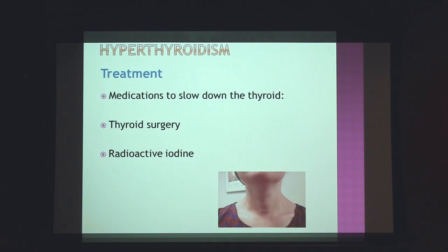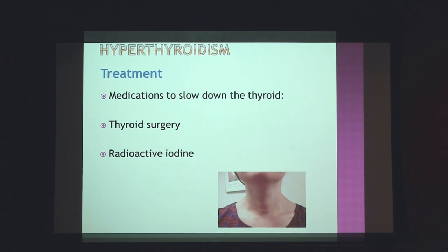There are three treatment options for hyperthyroidism. First, medications to slow down the thyroid to emit less thyroid hormone. Second, surgery to directly remove the entire thyroid gland. Third, radioactive iodine — this is a much larger dose than the diagnostic test, and the radiation is able to permanently eliminate the thyroid gland.